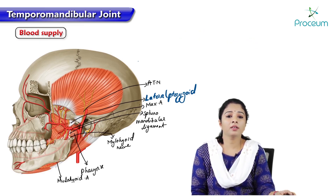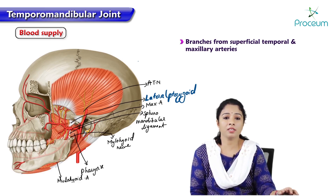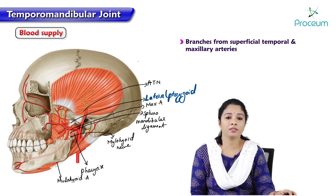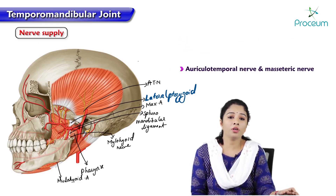The blood supply is provided by branches of the superficial temporal and maxillary arteries. The nerve supply is by the auriculotemporal nerve and the masseteric nerve.